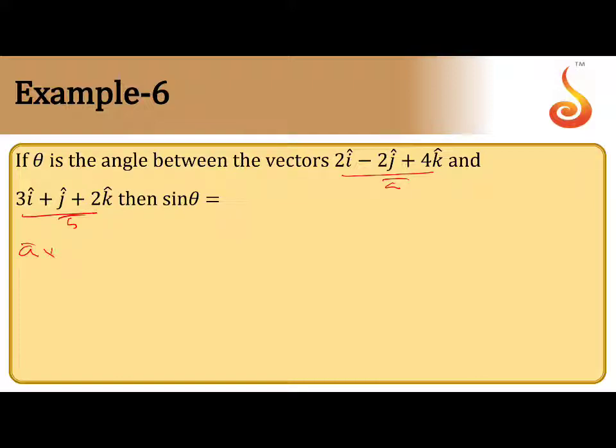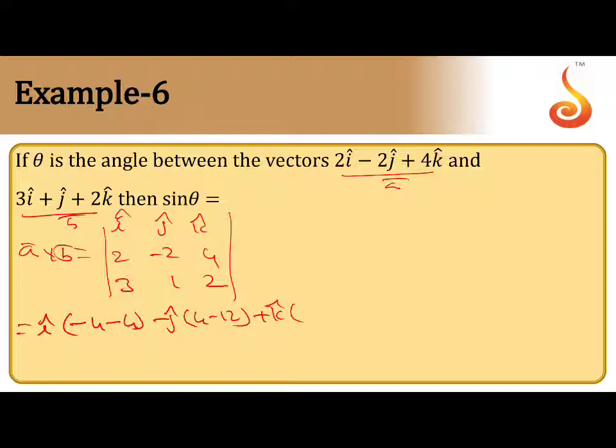Find a cross b. A cross b is i cap j cap k cap, so here 2 minus 2, 4, 3, 1, 2. I cap into minus 4 minus 4, minus j cap into 4 minus 12, plus k cap into...